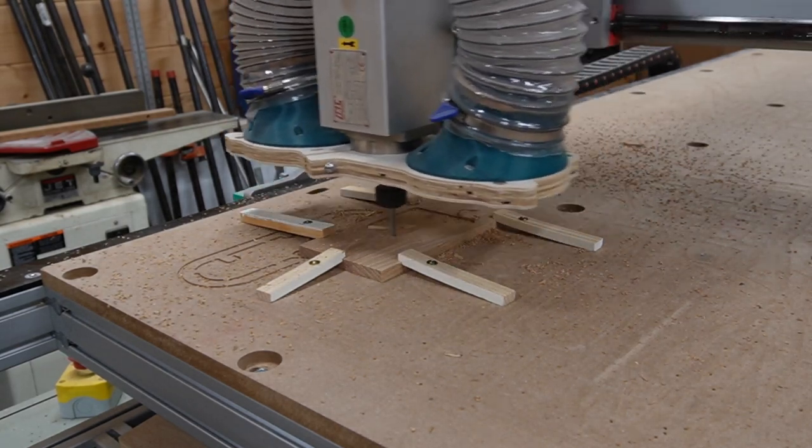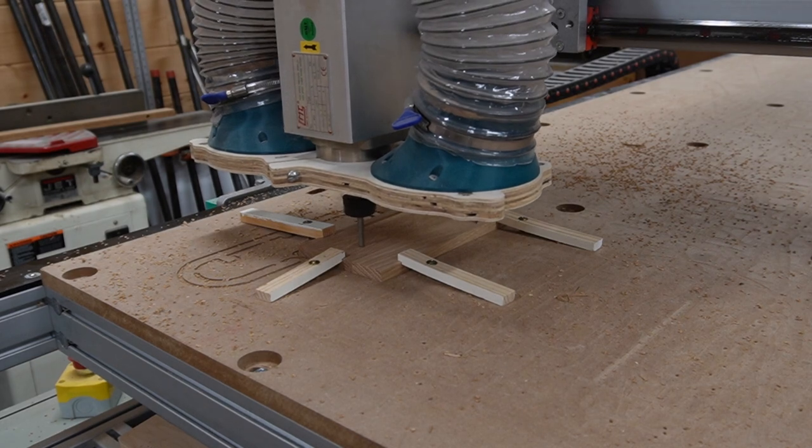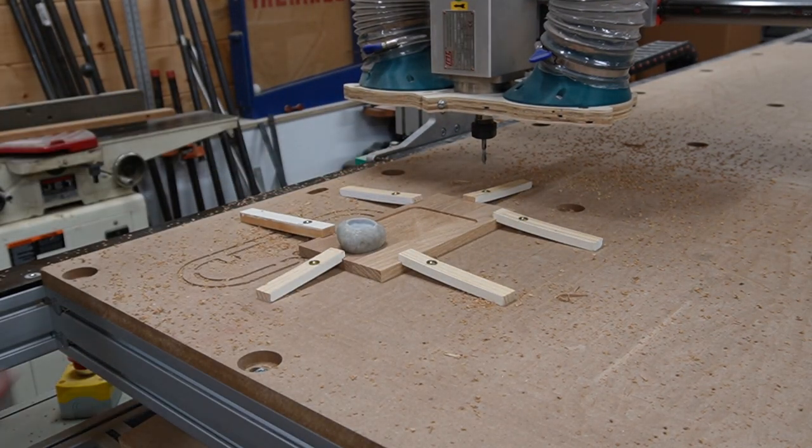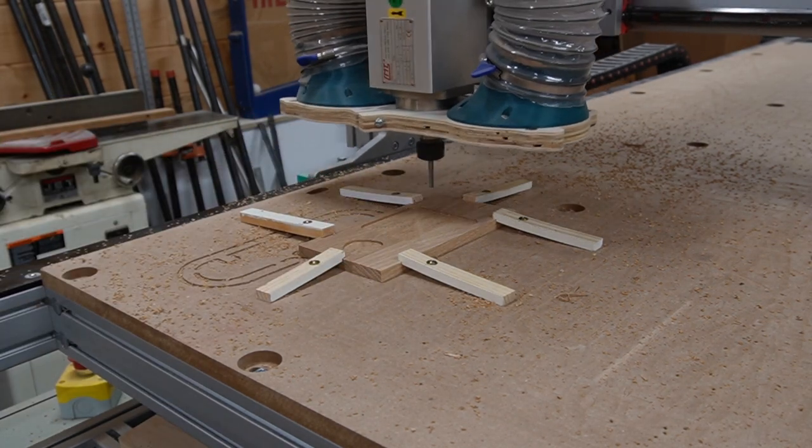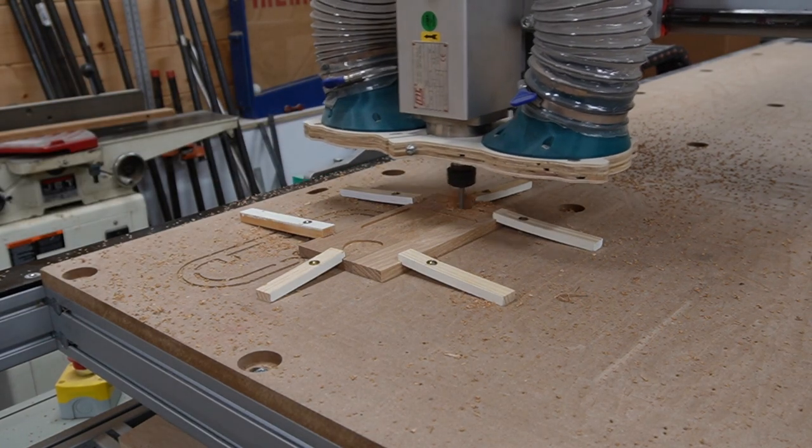I quickly sanded the top and the bottom with a random orbit sander and then attached it to my CNC. I cut each pocket individually so I could test how each item fit and tweak the size if necessary. If you don't have access to a CNC but want to make a project like this for yourself, you could lay out your cut lines by hand or use paper templates and then use a jig or freehand route the pockets. Just remember, do the best you can with what you have.